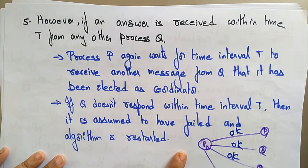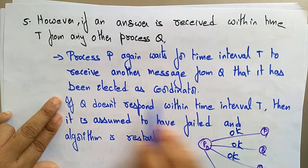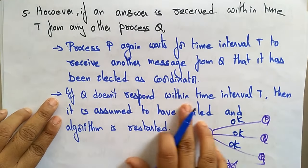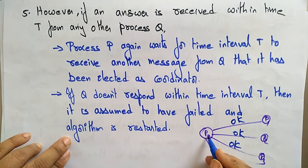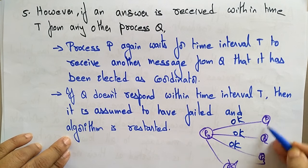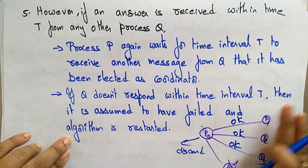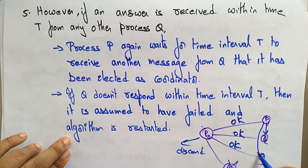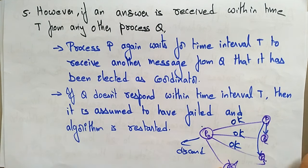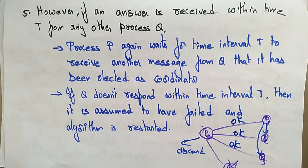When P receives an OK message, it waits for time interval T to receive another message declaring a new coordinator from process Q. If Q does not respond within time T, it is assumed to have failed and the algorithm is restarted. If an OK is received, P hands over its role to the higher-priority process, which then takes on the coordinator role and continues the election among remaining processes.